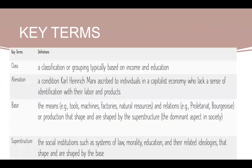Let's discuss the key terms. Class is a classification or grouping typically based on income and education. Alienation is a condition Marx ascribed to individuals in a capitalist economy who lack a sense of identification with their jobs, their labor, and their products.